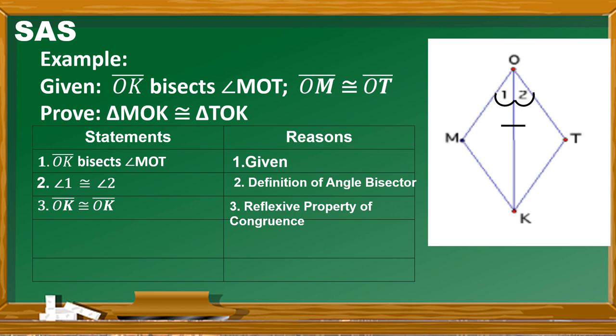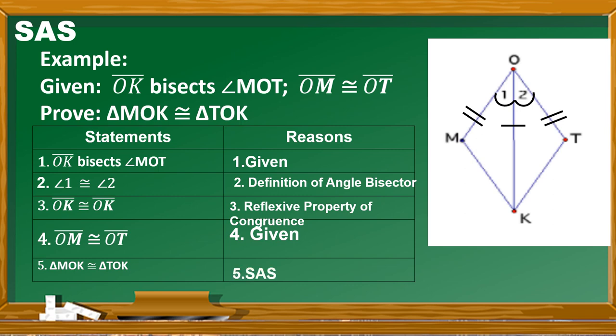For the fourth statement, segment OM is congruent to segment OT, and the reason is given. From our illustration, we can use markings to see the flow of our proving. With these — two sides and an included angle — we can now say that triangle MOK is congruent to triangle TOK by the SAS postulate. That is how to prove triangles using SAS.